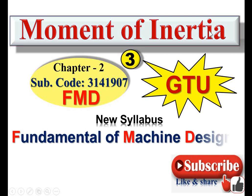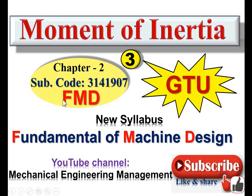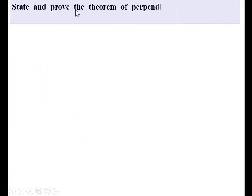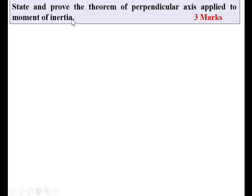Today we are talking about moment of inertia part 3 for the subject FMD, means Fundamental of Machine Design. The subject code is 3141907 and this is a new syllabus for the GTU. Welcome to my YouTube channel, Mechanical Engineering. Please like, share and subscribe. Let's take one question: state and prove the theorem of perpendicular axis applied to moment of inertia. The weight of this question for the examination is three marks — this is a very important question for the examination.